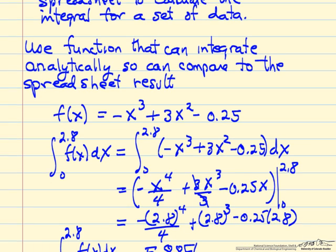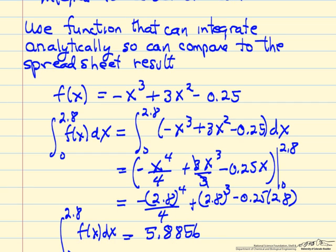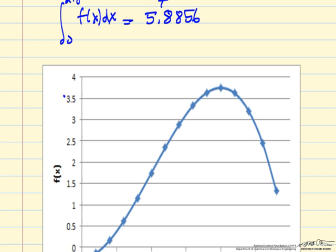So the function is a simple polynomial function, and what we want to do is integrate from 0 to 2.8. Just a standard showing the integration here, applying the limits where we substitute 2.8, and then of course all the terms are zero at the other limit. And so the integral, which corresponds to the area under the curve, is 5.8856.